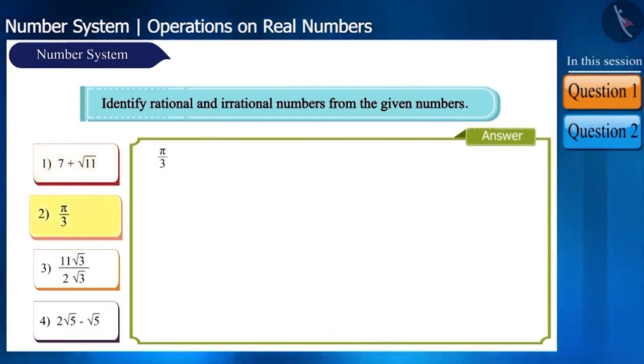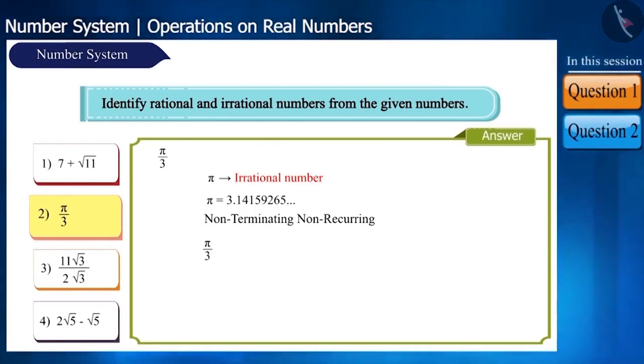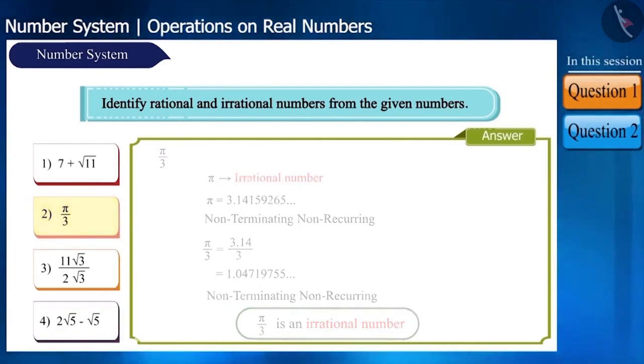The second number is pi by 3. We know that pi is an irrational number and its decimal expansion is non-terminating, non-recurring. Even if it is divided by 3, it will be non-terminating, non-recurring, which means it is also an irrational number.